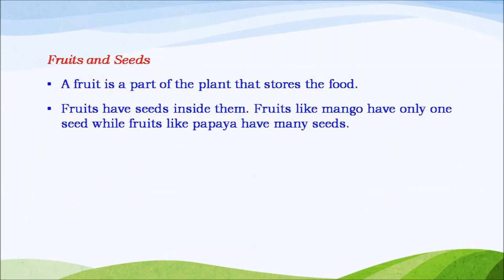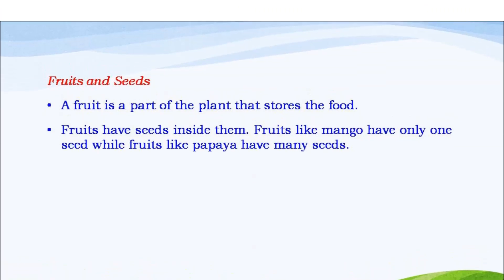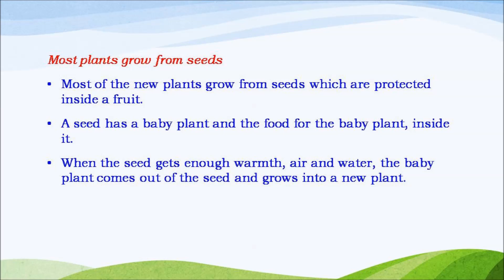Fruits and seeds. A fruit is a part of the plant that stores food. Fruits have seeds inside them. Fruits like mango have only one seed while fruits like papaya have many seeds. Most of the new plants grow from seeds which are protected inside a fruit. A seed has a baby plant and food for the baby plant inside it. When the seed gets enough warmth, air and water, the baby plant comes out of the seed and grows into a new plant.